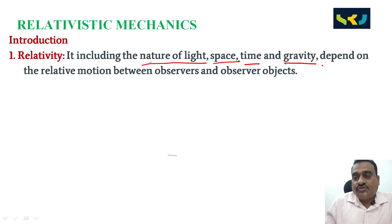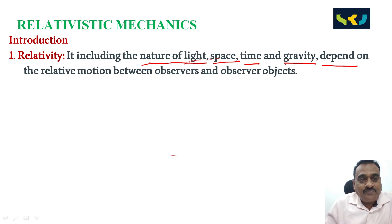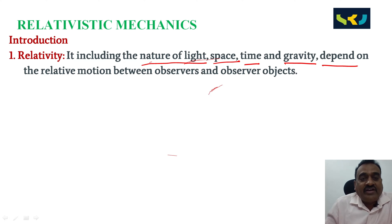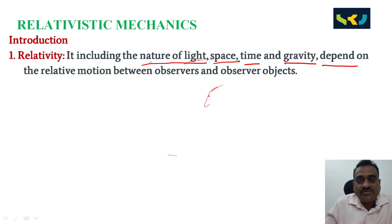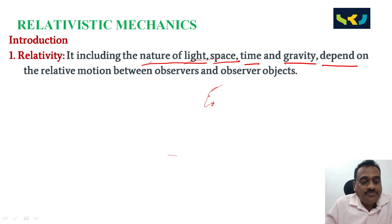Depending on these four aspects — the nature of light, space, time, and gravity — the relativistic mechanics describes the relative motion between observers and observed objects.